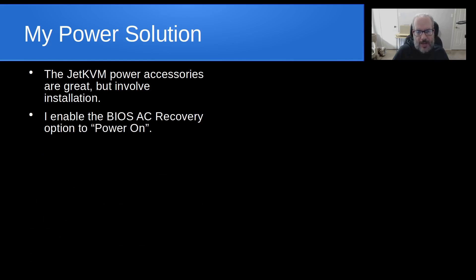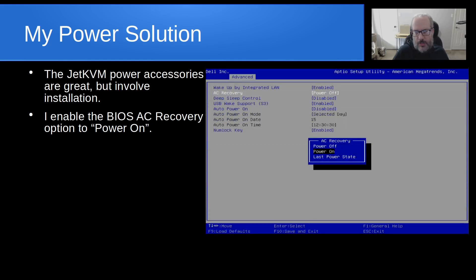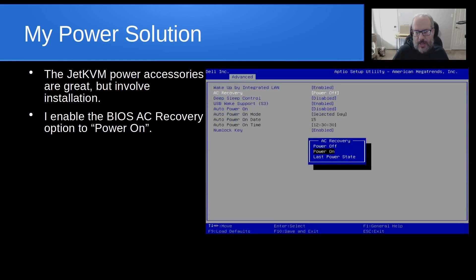I enable the BIOS AC recovery option set to 'power on.' This is a screenshot of the Dell XPS 8930 BIOS advanced settings, under a section called Power Options. One of the options is AC Recovery, which was previously set to 'power off.' When I clicked on it, a pop-up showed the options: power off, power on, and last power state.